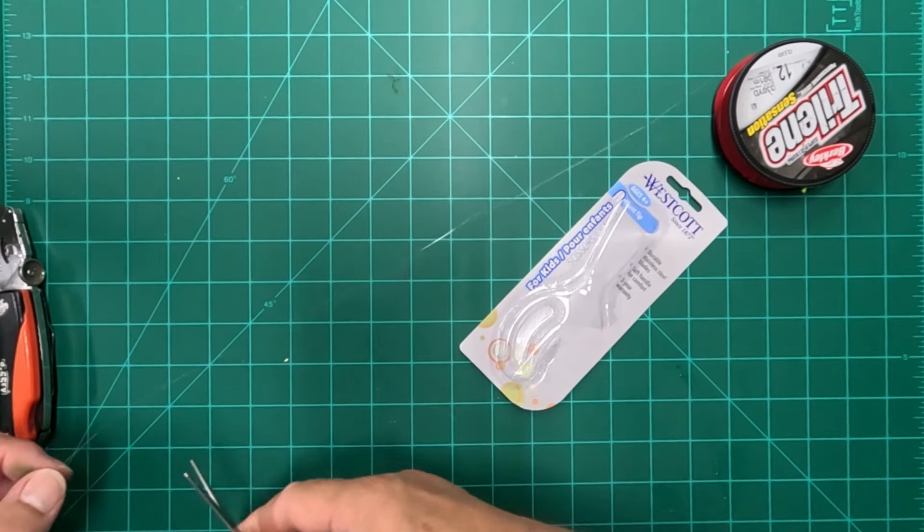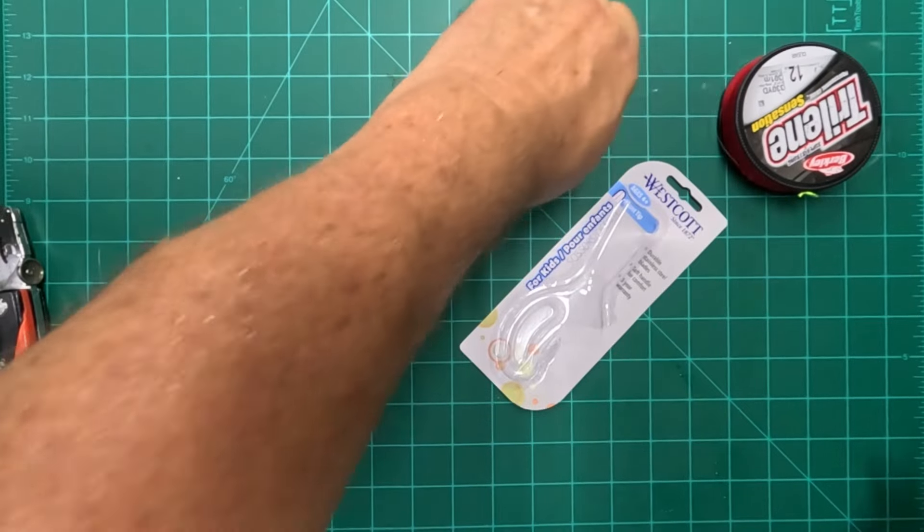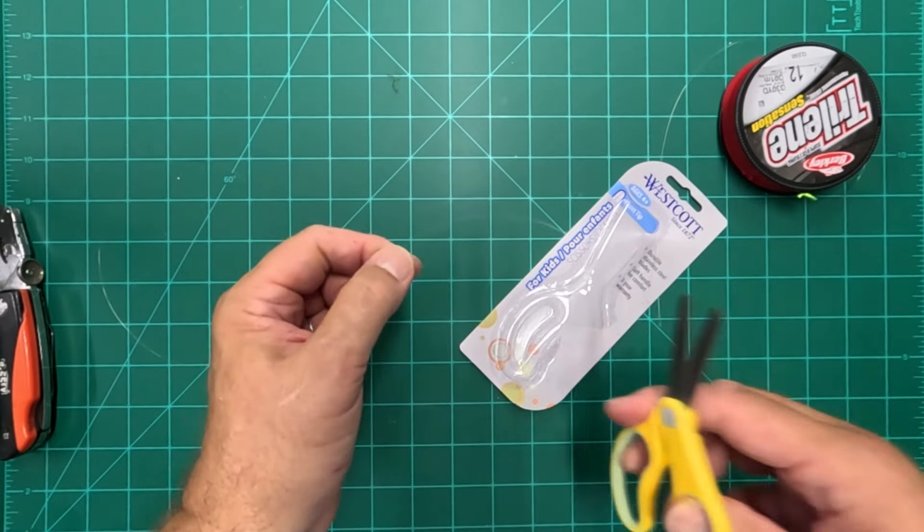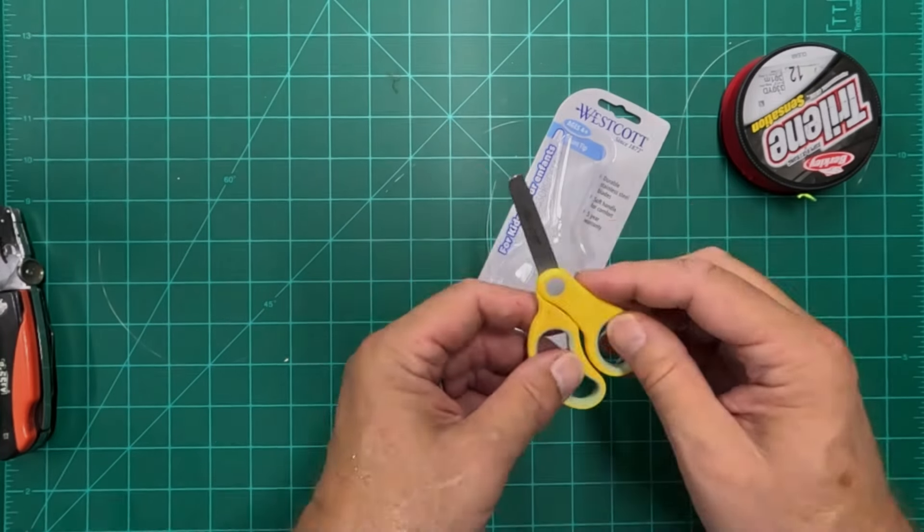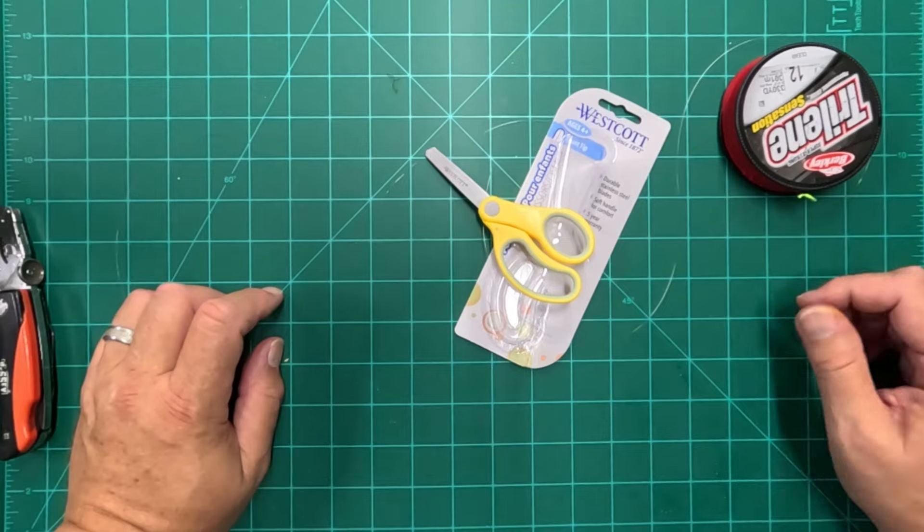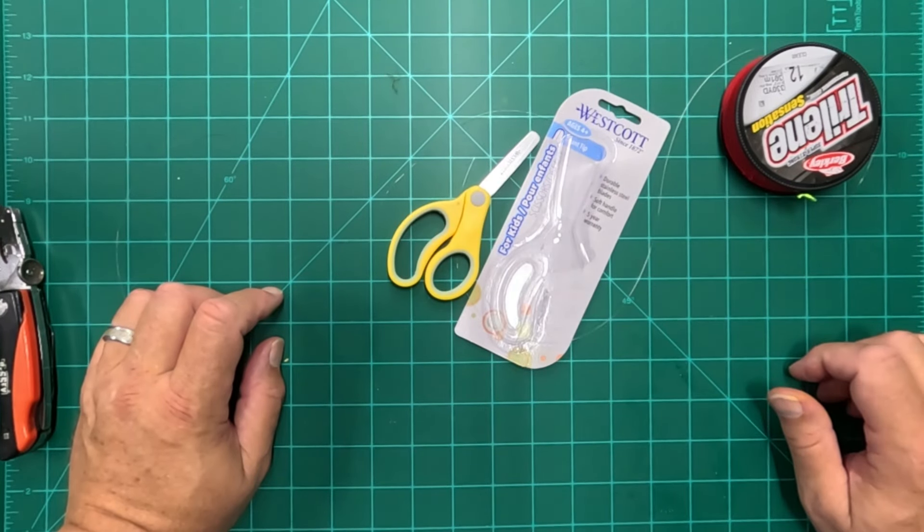I've tried these on braid as well as monofilament and some of the other lines, and it really works on all of them. So they're compact, they're small. We need a set of line cutters for a backpack tackle box, so a pair of these kids scissors are going to be just the ticket.